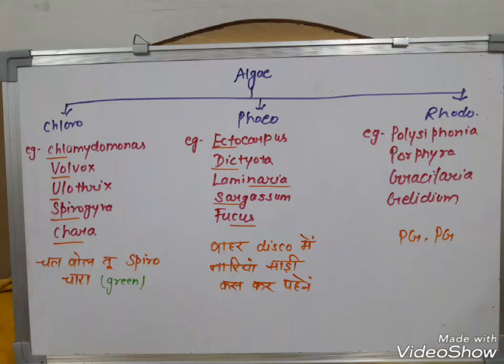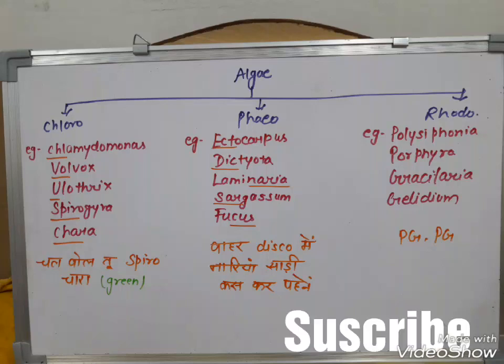Phaeophyceae examples are Ectocarpus, Dictyota, Laminaria, Sargassum, and Fucus. The trick: think of a disco — Ecto is out, Disco, Nariya with Sargassum, Kus is Fucus — Nariya is wearing brown color to remember it's Phaeophyceae. Rhodophyceae examples are Polysiphonia, Porphyra, Gracilaria, and Gelidium — the trick is PG-PG, which is red color, so PG-PG is Rhodophyceae.